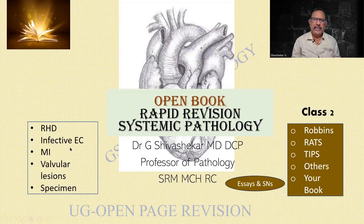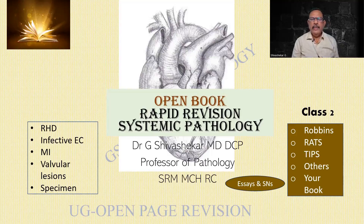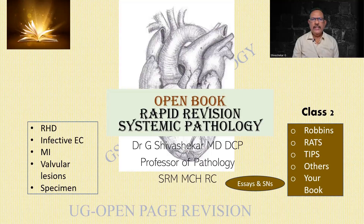The next will be infective endocarditis, which is also a very important valvular disease. The common question will be what are the different vegetations of the heart. The main answers will cover rheumatic heart disease and infective endocarditis. SLE and others are also there — there are four conditions including marantic endocarditis. Whenever there is an infection elsewhere, such as a periodontal abscess or any congenital heart disease, one can get infective endocarditis. Predisposing rheumatic heart disease can also lead to it. There are two sets — one is acute and the other is subacute.